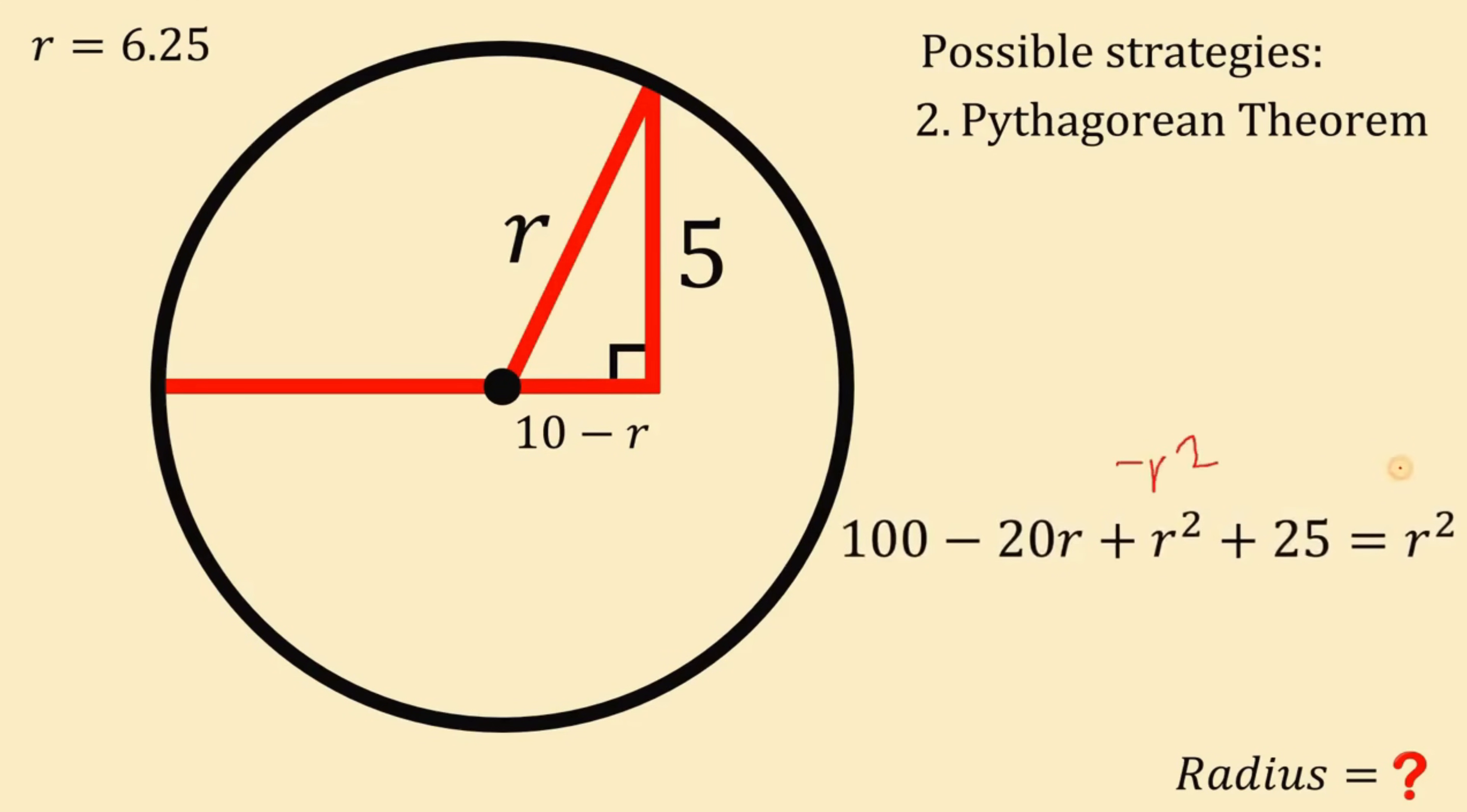Now, let's subtract R squared on both sides. And if we do that, we cancel out R squared on the right and the left hand side. Now, let's combine similar terms. 100 and 25. If we add 100 to 25, we get 125.